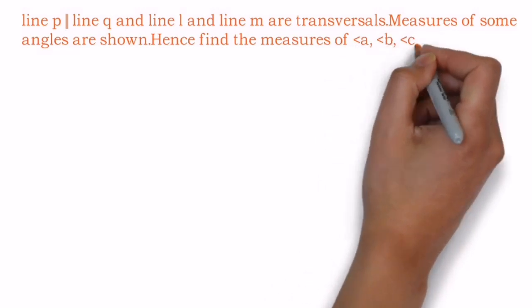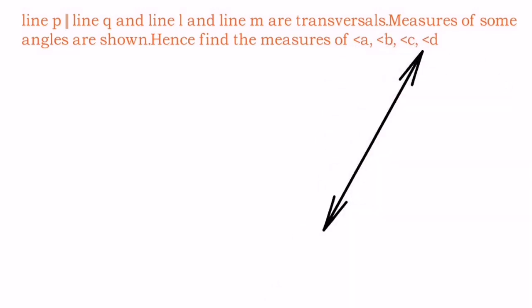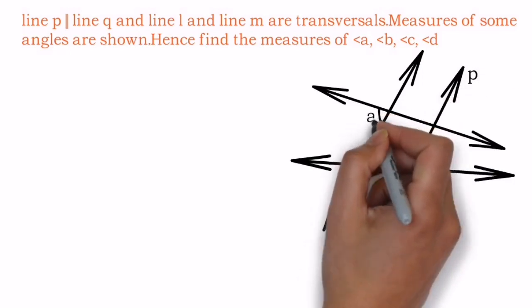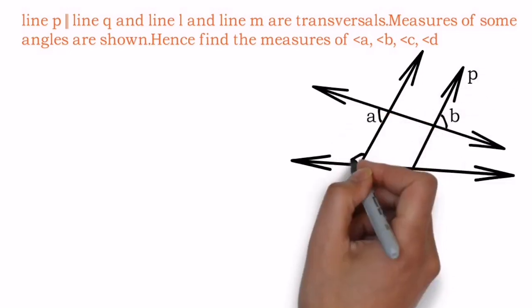The question says line p and q are parallel to each other, and line m and l are transversals. After that, a few measurements are given to you and we need to find angles a, b, c, d which are shown in the diagram by following the proper pattern.